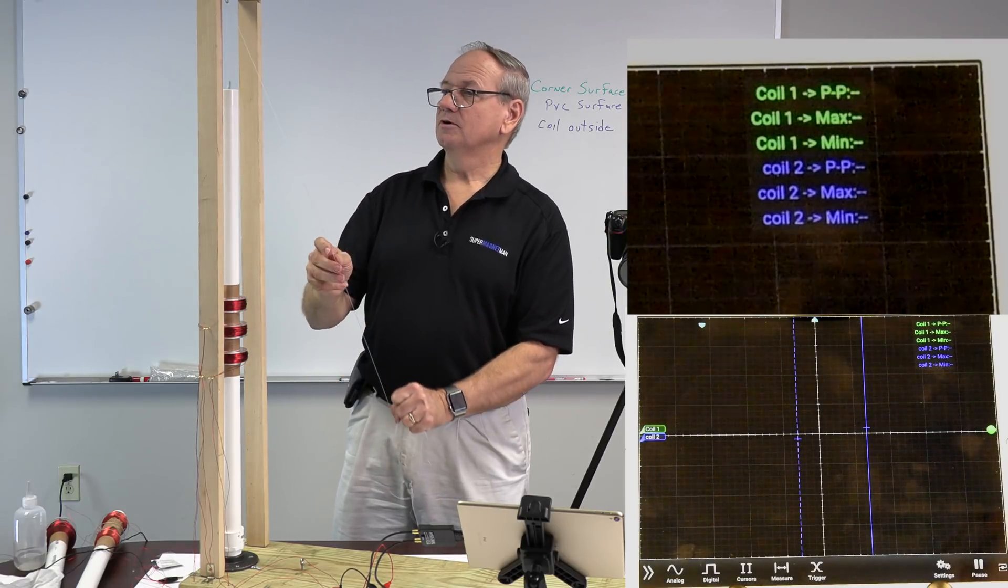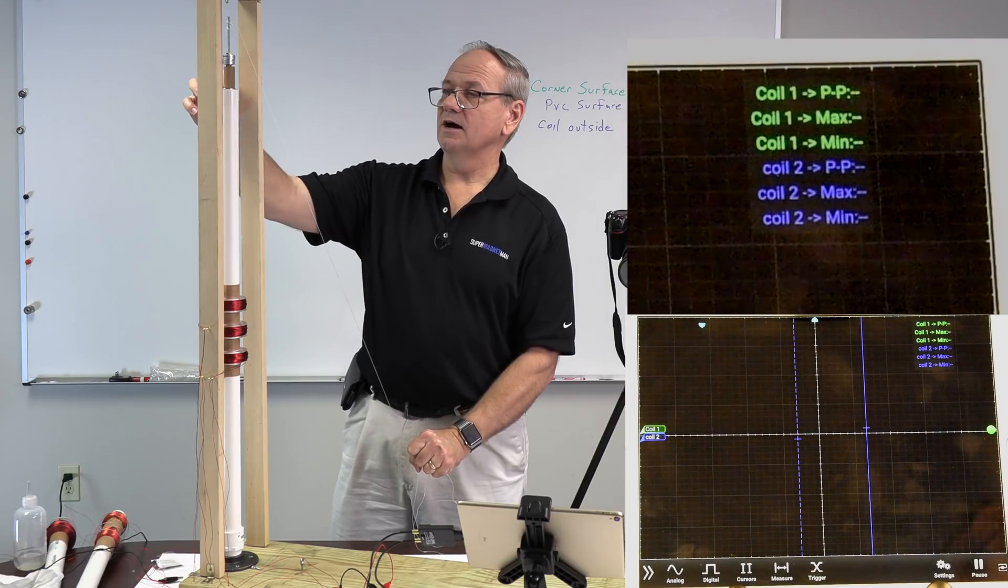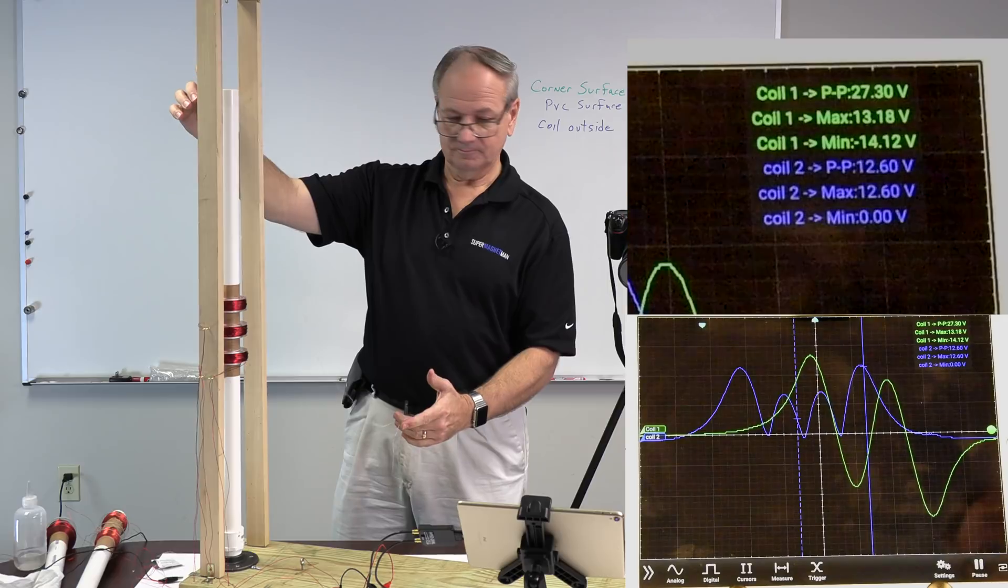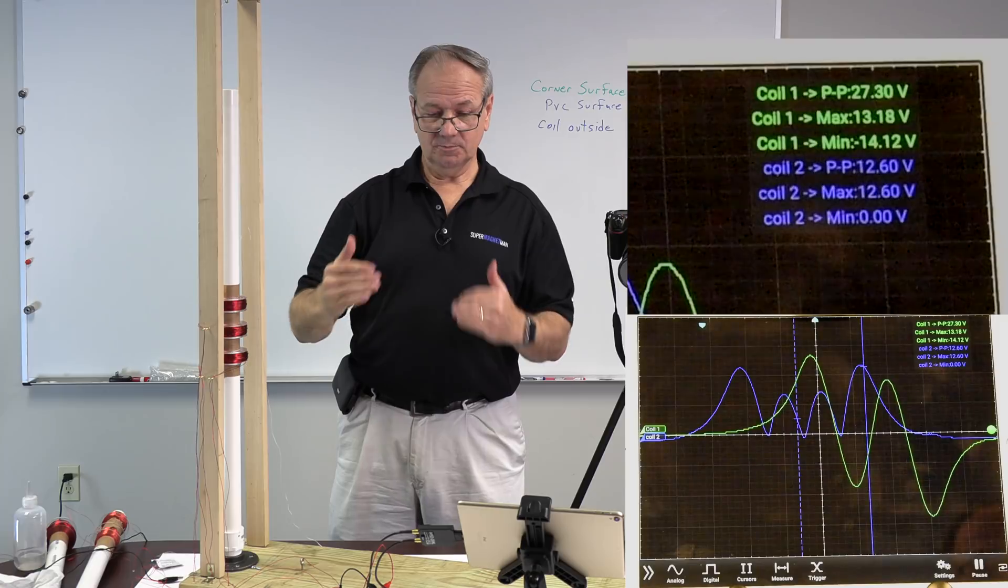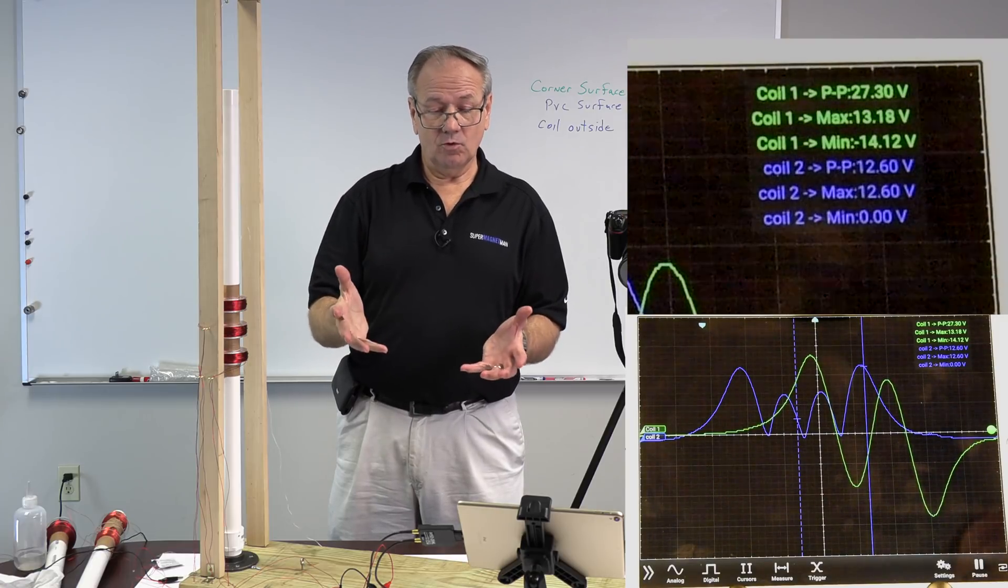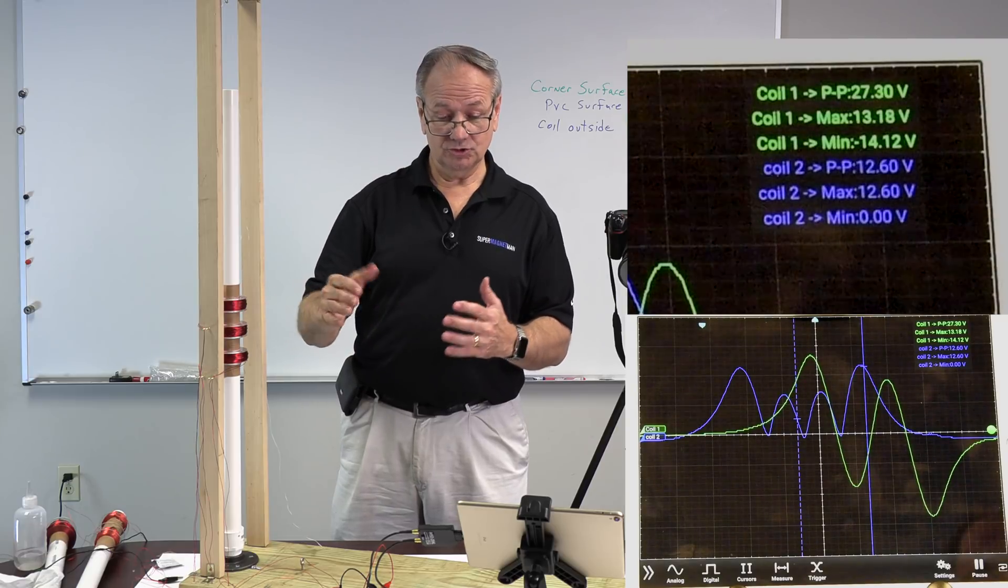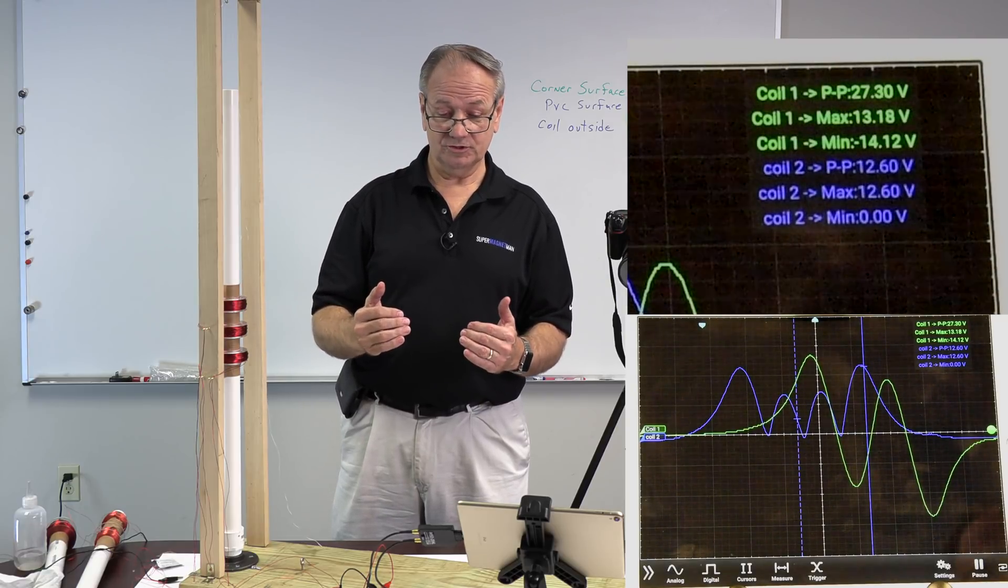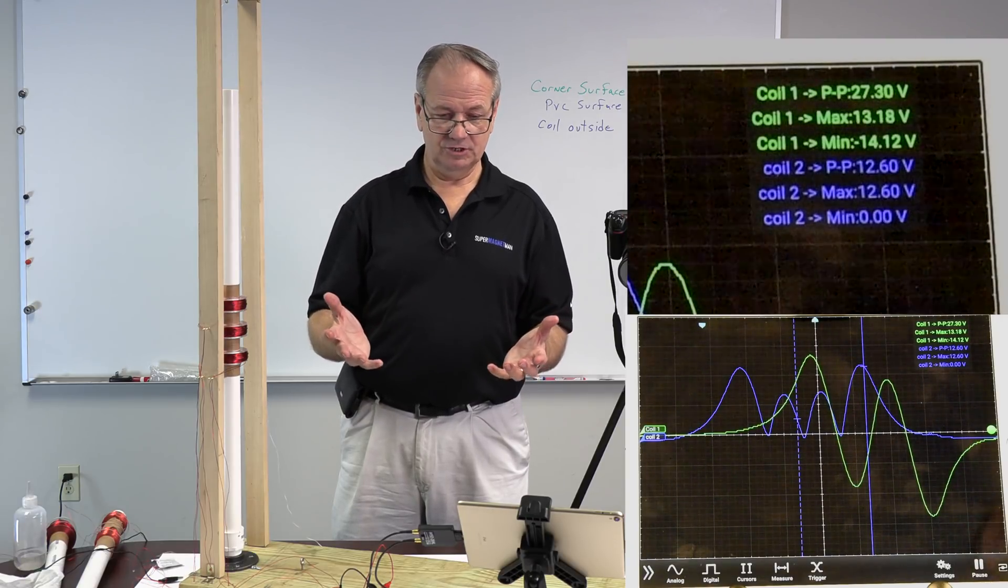So let's see what we get. As we go up, we get it up to where we can line up the magnet right at the top and drop. And now you can see we're getting 27.3 volts on the peak to peak for the green one. 13.18 is the max. Then you look at coil two, which was the other one. It should be a little less.